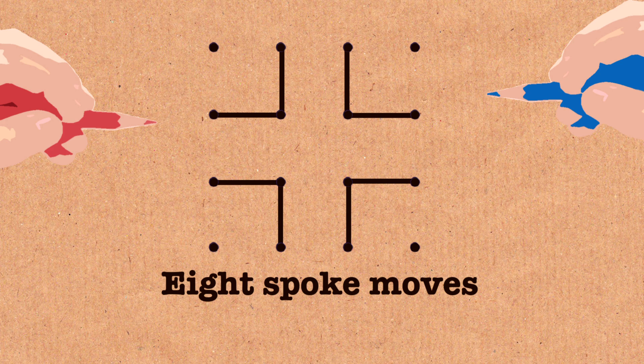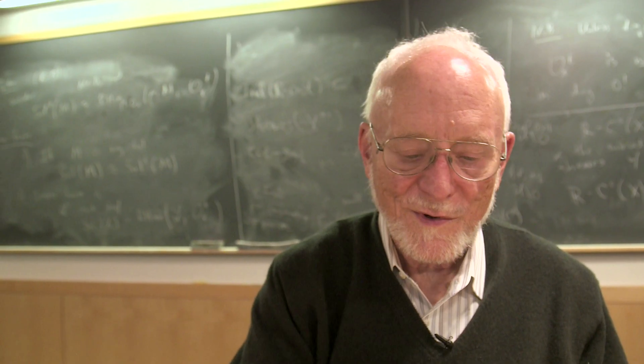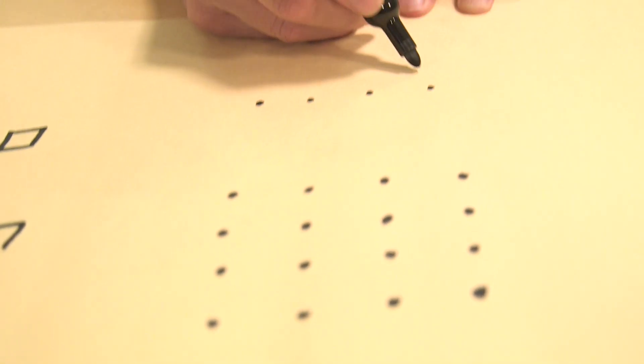If you can force all long chains to go through the center there will be only one. So any chain that doesn't go through the center necessarily has to be a side chain.